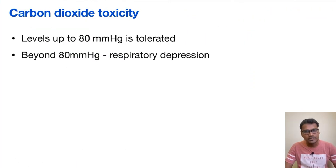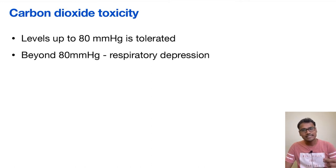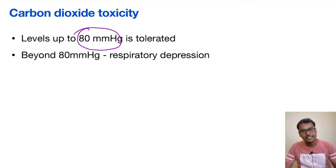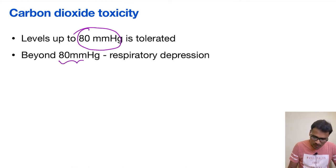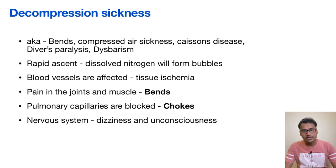As carbon dioxide levels increase, the respiratory system is stimulated. This stimulation occurs until CO2 levels reach 80 mmHg. When CO2 levels go beyond 80 mmHg, respiratory depression occurs.